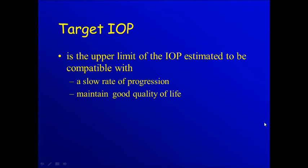Target intraocular pressure is the upper limit of the IOP estimated to be compatible with a slow rate of progression of glaucoma in order to maintain a good quality of life.